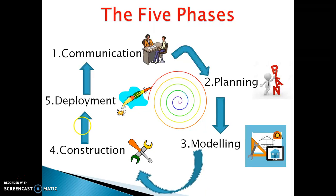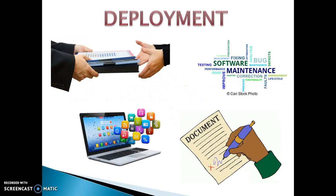The final phase is the deployment phase. The final documentation is done at this stage. Documentation is very much essential for any product so as to provide information on how to operate the software and the details of how the whole process of software development is done. This ensures the safety and maintenance of the software in the future. After completing all these phases, if there are any other changes to be made, then the process continues all over again from the communication phase until the final desired software is ready.